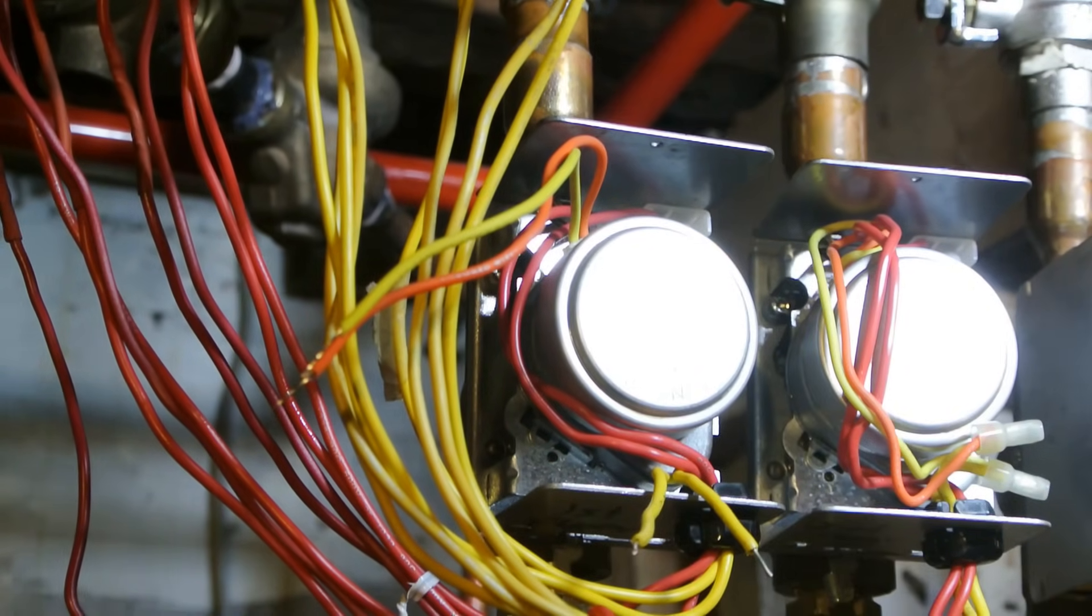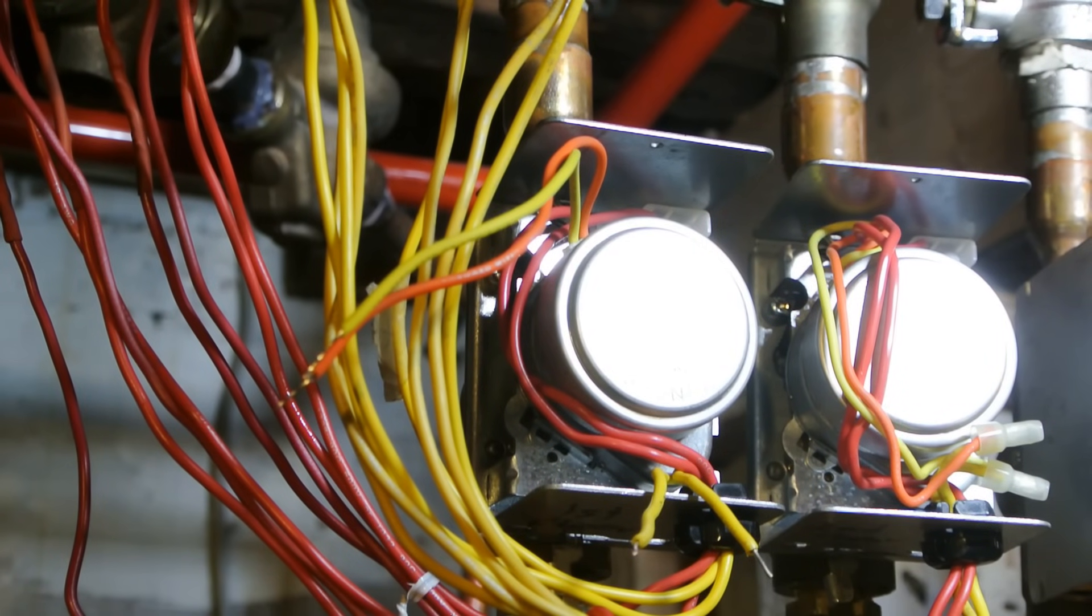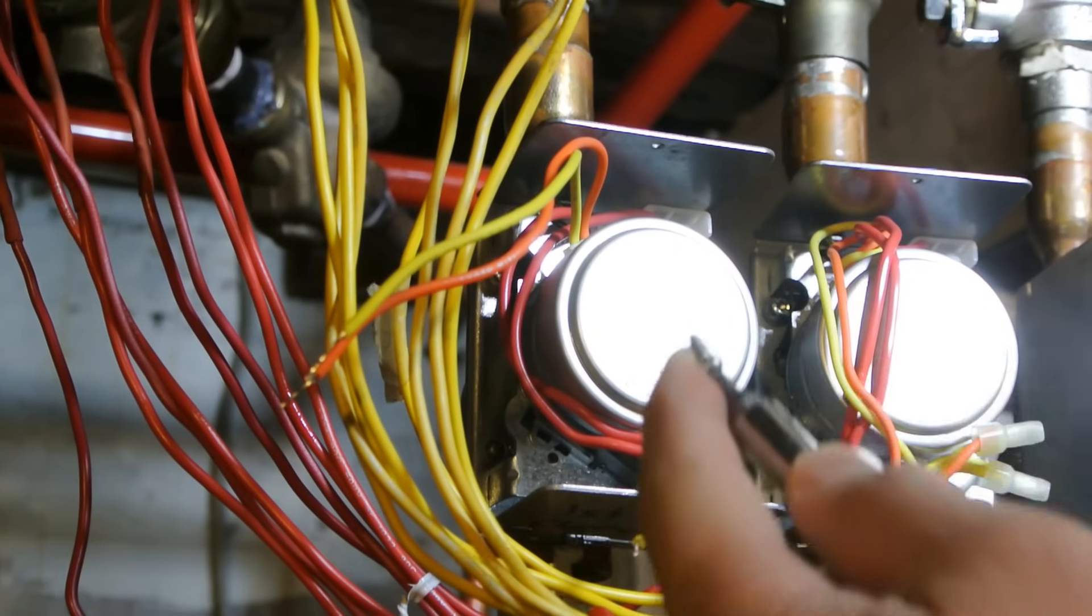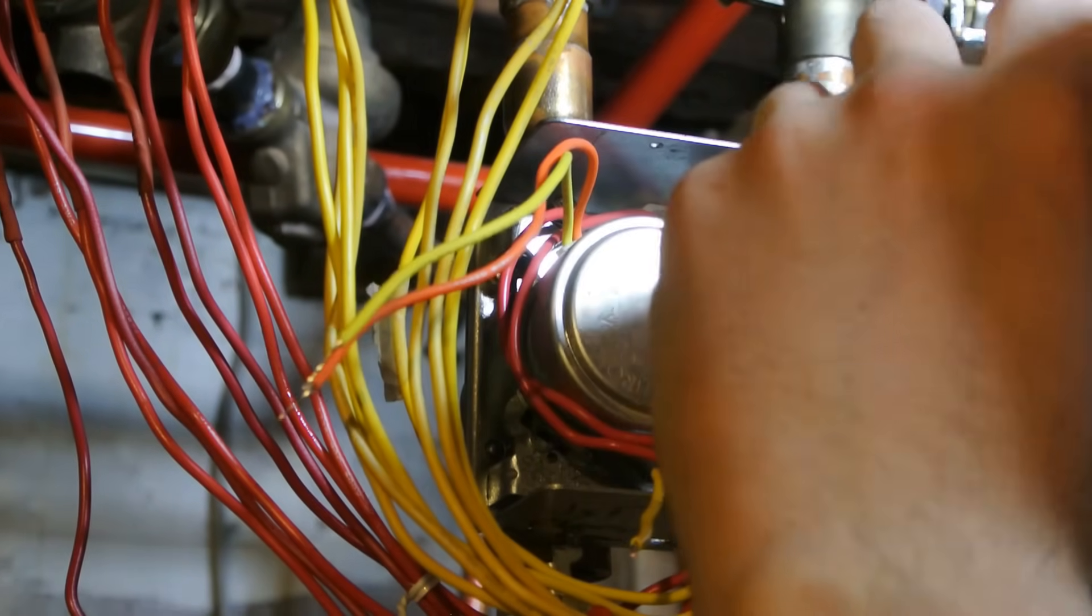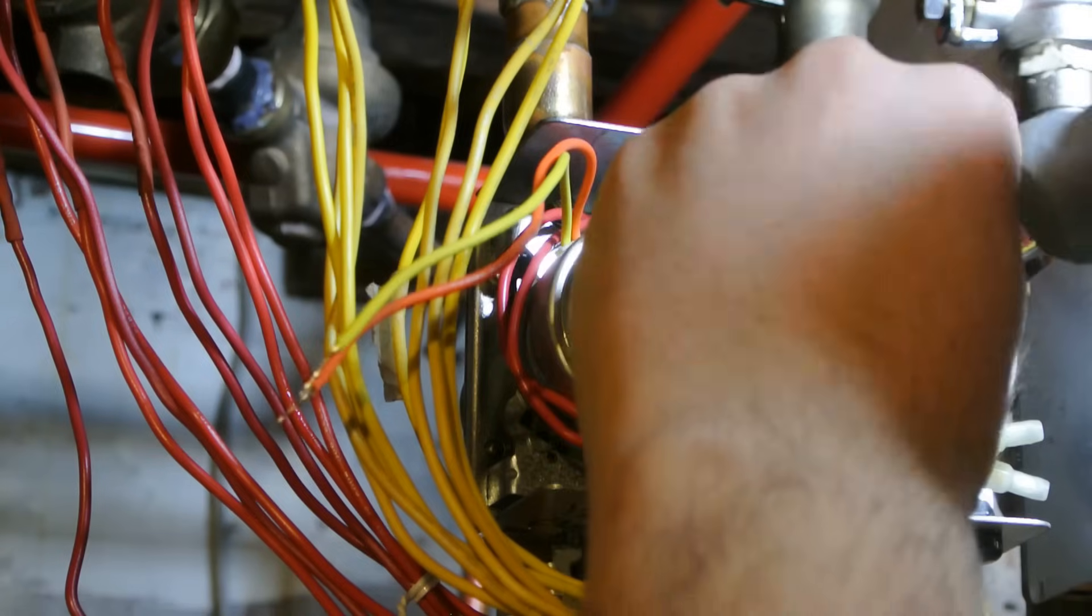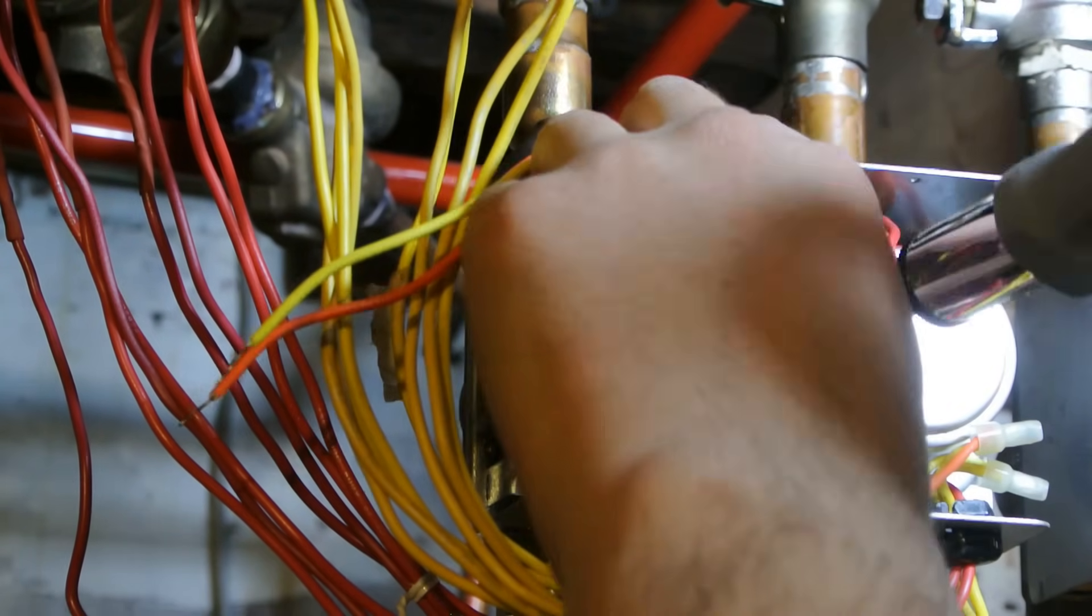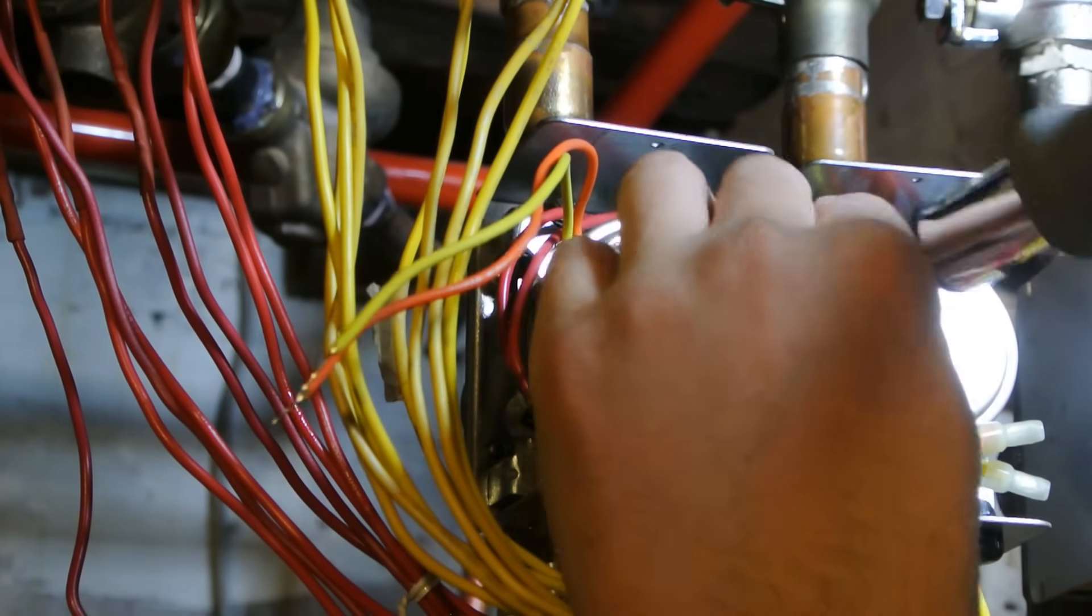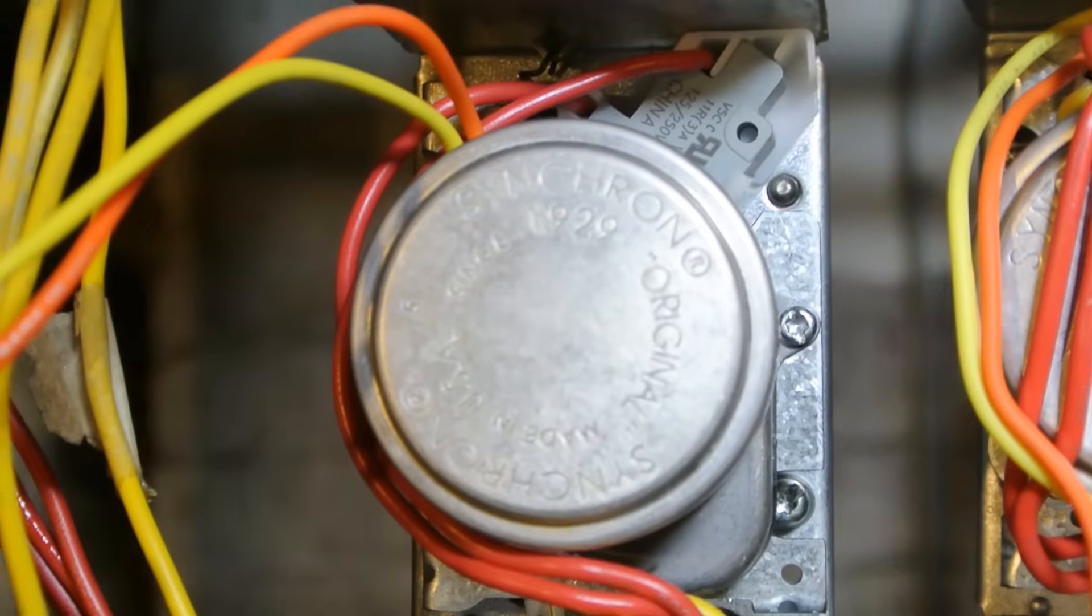So now we're going to just do the reverse. And my boiler is working as I'm doing this, so you don't even have to shut off the boiler to do this. Now I'm going to put the screw back in over here on the one side. Just snug it. Nothing too tight. You don't want to be stripping anything.